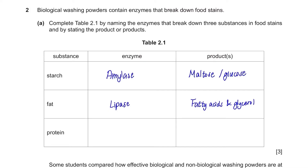For protein, write any from protease, pepsin, or trypsin under enzyme, and the product will be amino acids.